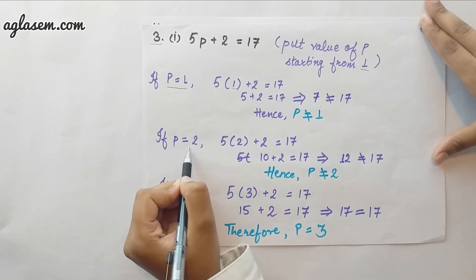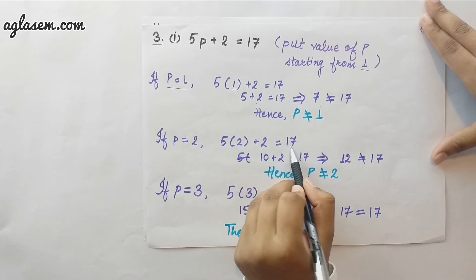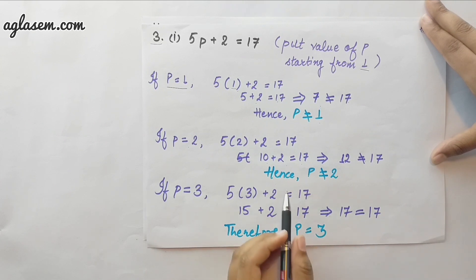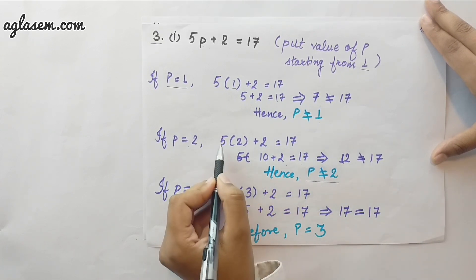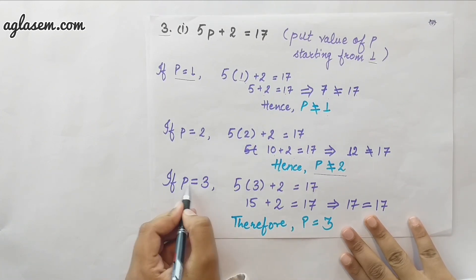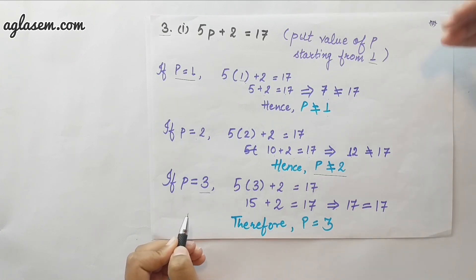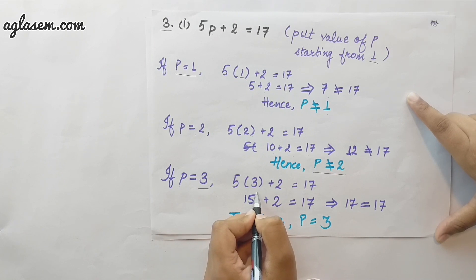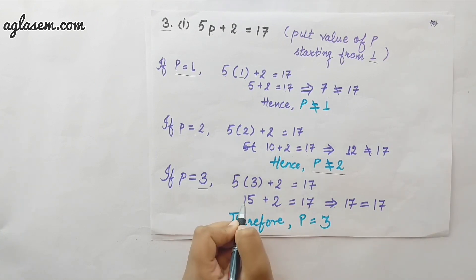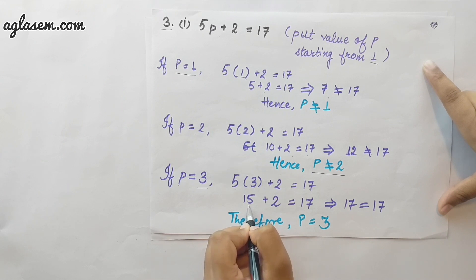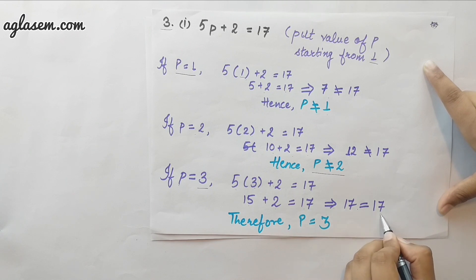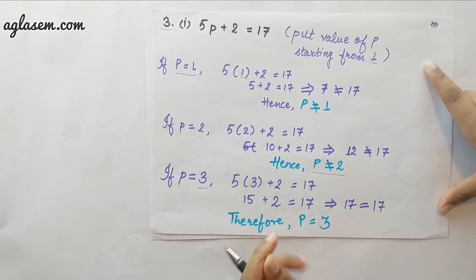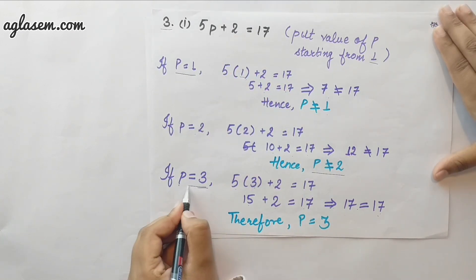For p equals to 2: 5 into 2 plus 2 equals to 17 gives 12, which is not equal to 17. For p equals to 3: 5 into 3 plus 2 equals to 17. 15 plus 2 equals 17. 17 is equal to 17, so the left hand side equals the right hand side. Therefore p equals 3 satisfies the equation and our answer is p equals 3.